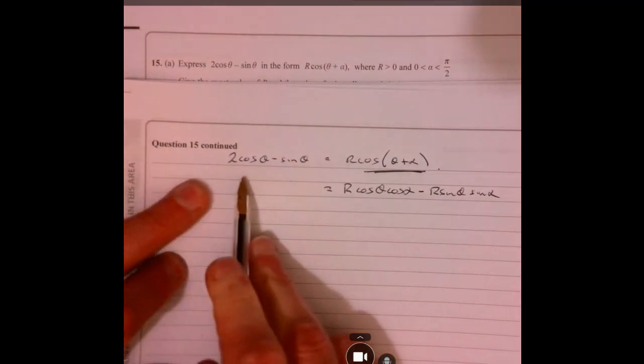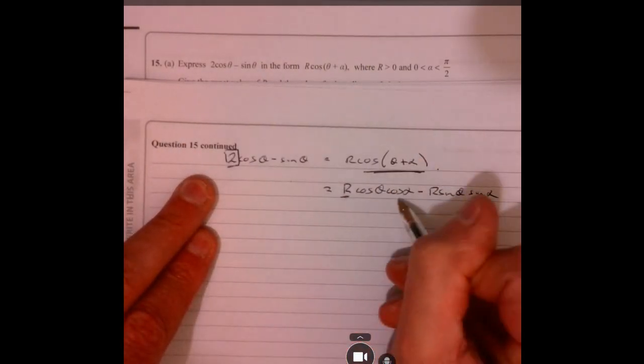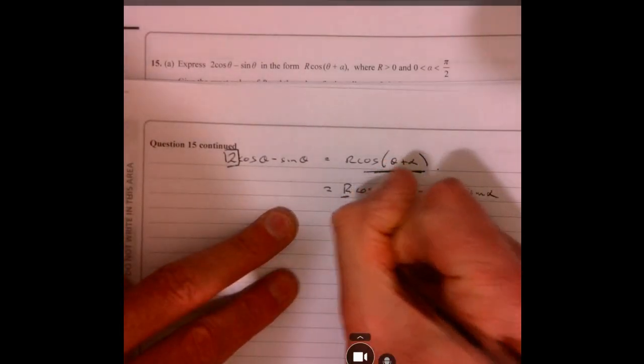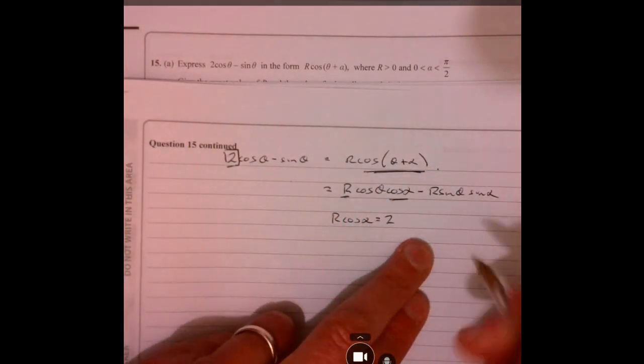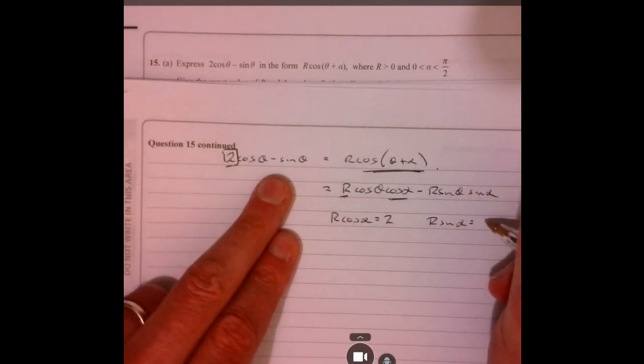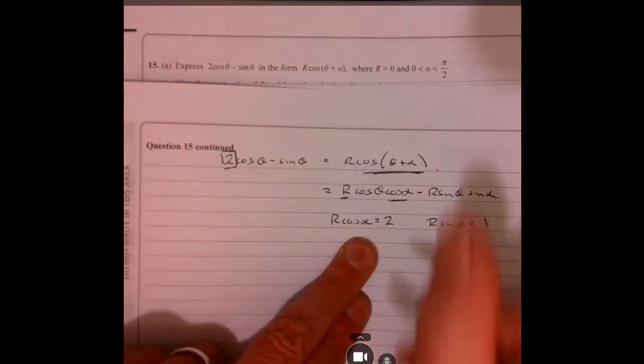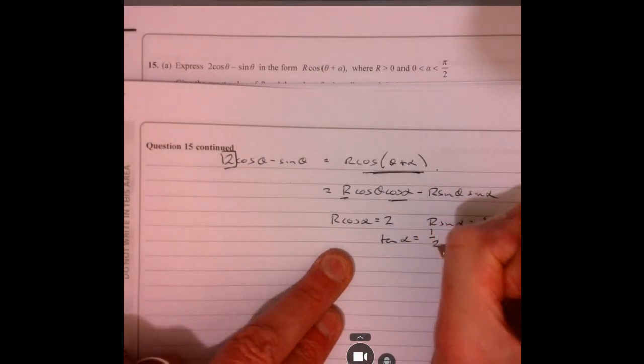And what are we looking for? So from here, we're just equating the coefficients. So this 2 here must be equal to those two bits. So we can write R cos alpha equals 2. And then in the same way, R sine must equal just 1. R sine divided by R cos, so tan alpha must equal one half.